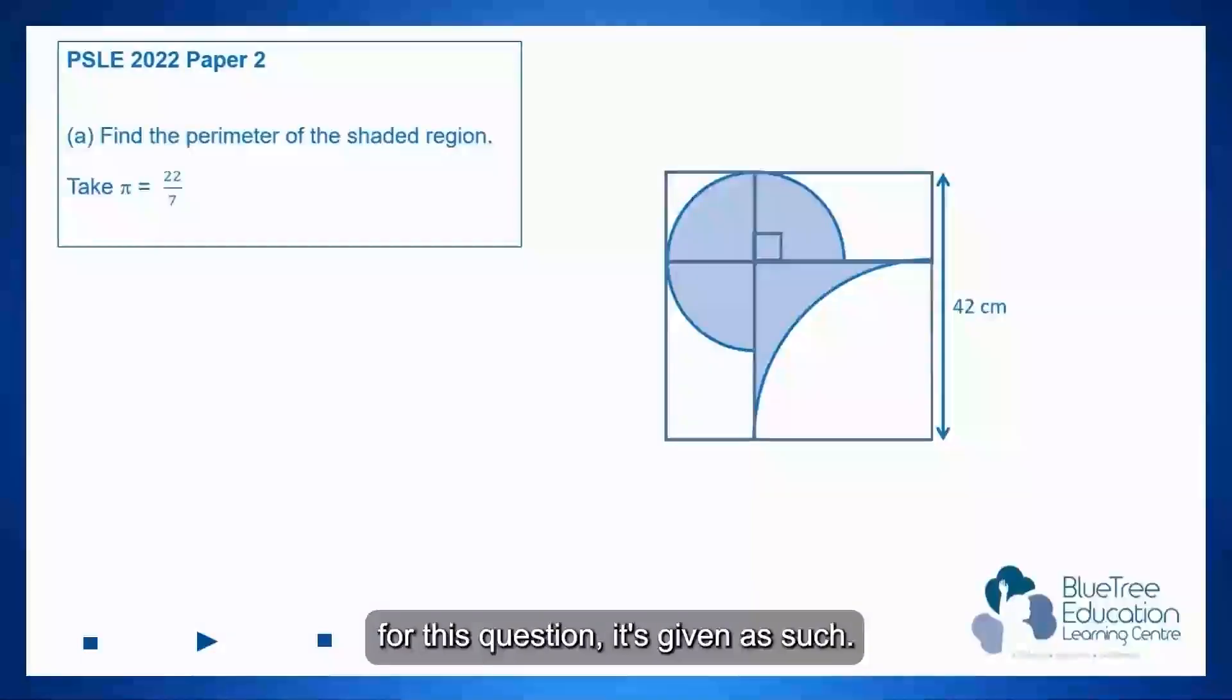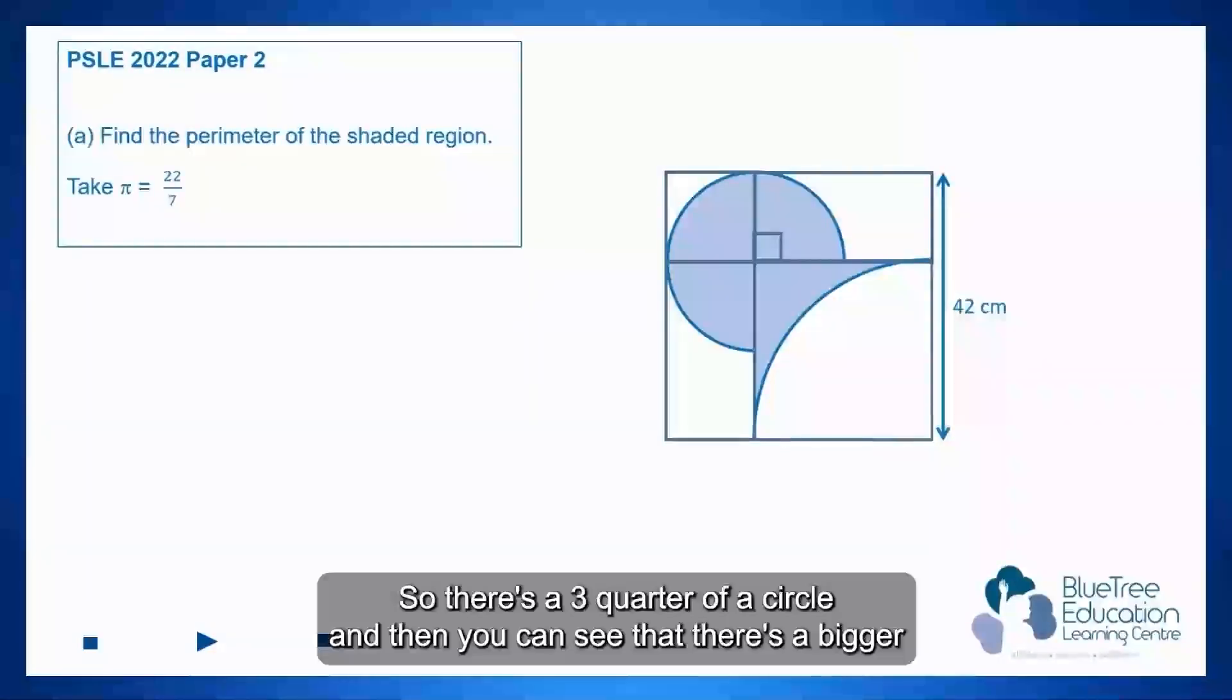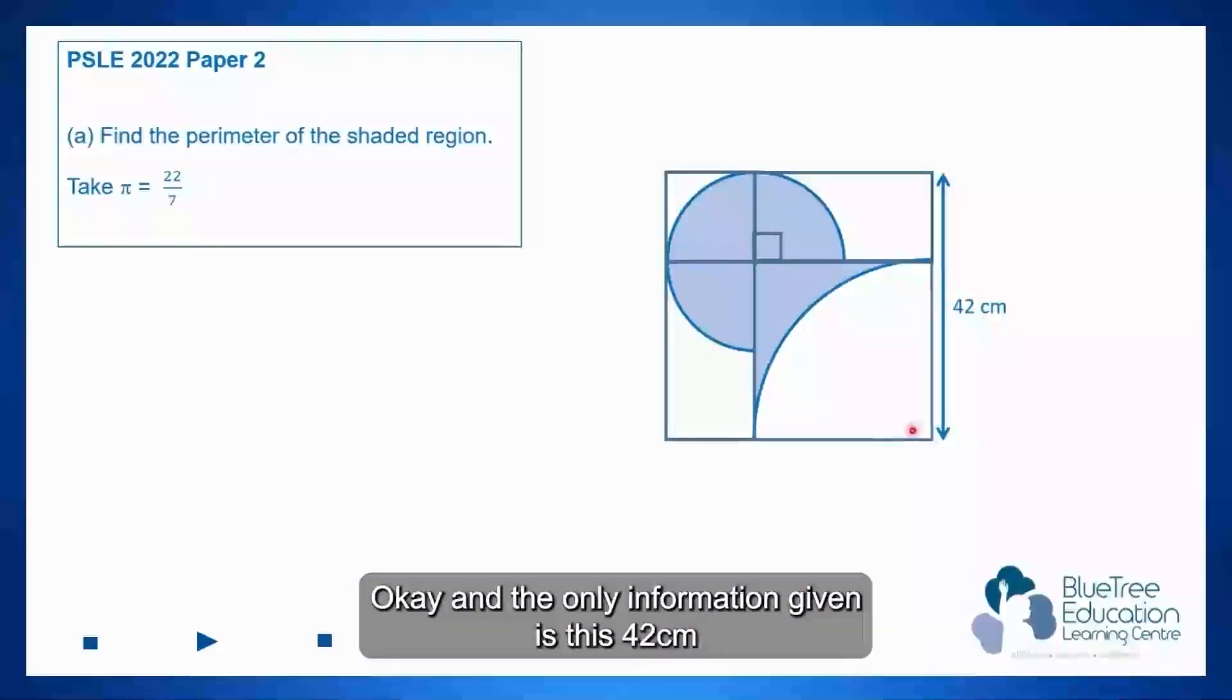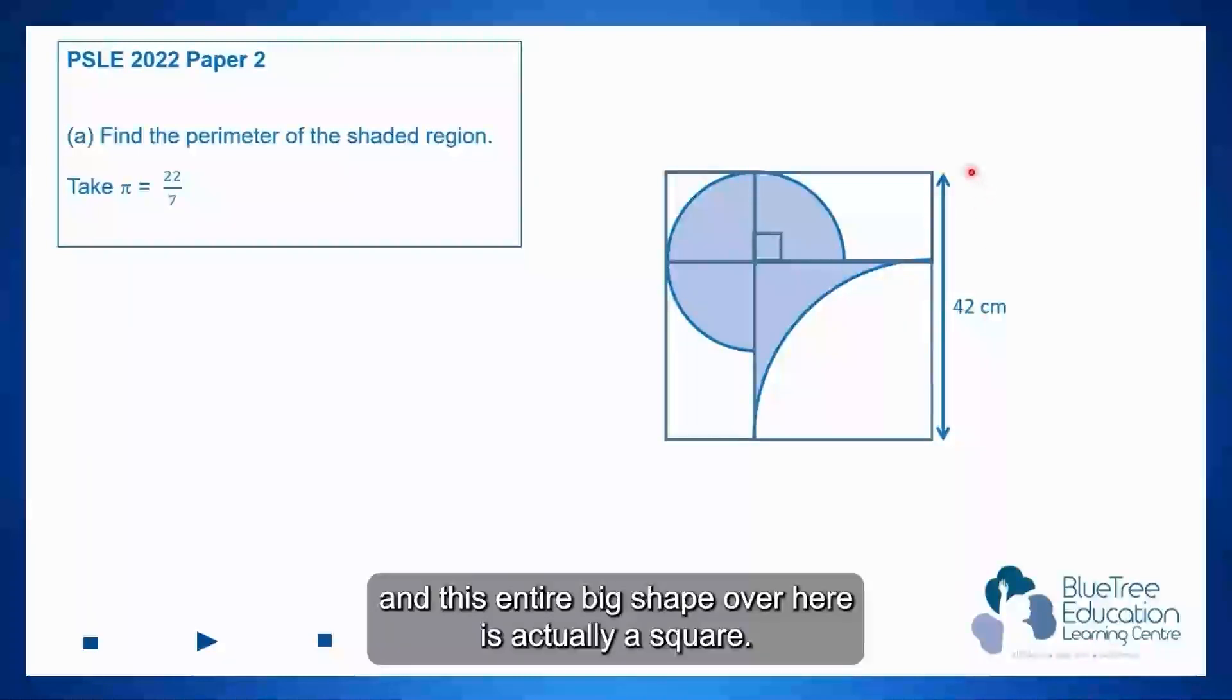The diagram for this question is given as such. So there's a three-quarter of a circle and then you can see that there's a bigger quarter arc on the right-hand side, bottom right of the diagram. And the only information given is this 42 cm and this entire big shape over here is actually a square.